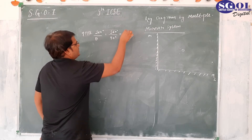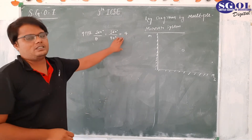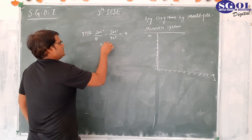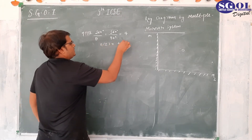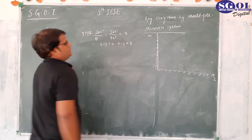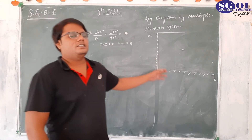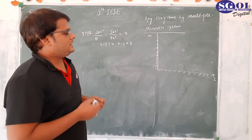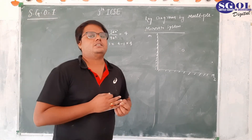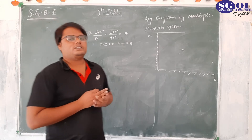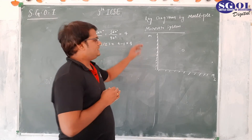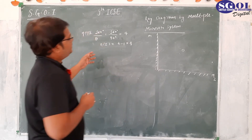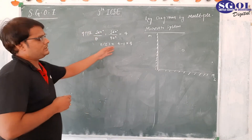So 360 divided by 90 equals 4. Since it is an even number, the number of images formed will be 4 minus 1, which equals 3. So in this case, 3 images will be formed. We know that a single plane mirror forms one image of a single object, but here with two plane mirrors, 3 images are formed.